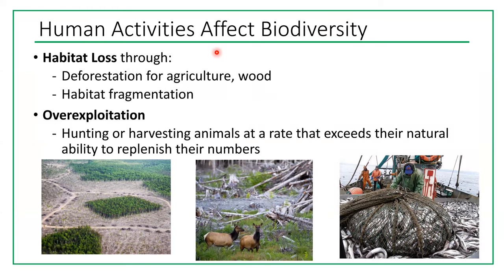Habitat loss through deforestation for agriculture and wood, and habitat fragmentation, are major human activities that affect biodiversity. When land is broken into small pieces that become like islands, animals cannot move and interact with animals in nearby habitat fragments. This is a very important factor in reducing the ability of plants and animals to survive and decreasing biodiversity.